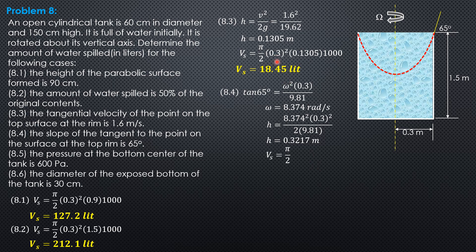So substitute. Volume spilled is pi over 2 times 0.3 squared times 0.3217 times 1,000 to convert it to liters. So volume spilled is 45.48 liters.